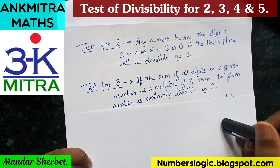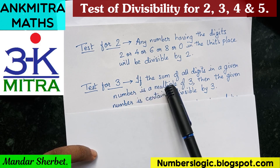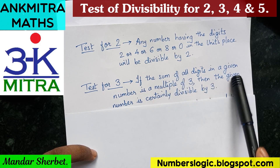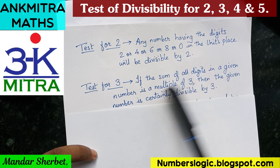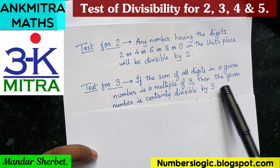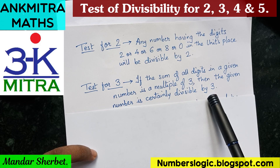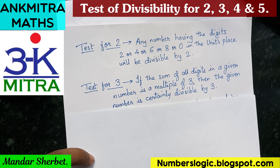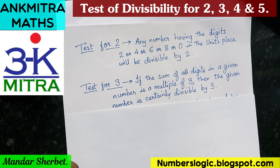So the test for divisibility for 3 is: if the sum of all the digits in a given number is a multiple of 3, then the given number is certainly divisible by 3. If you have a 4-digit, 5-digit, or even a 10-digit number, all you have to do is add up all the digits. If that sum is a multiple of 3, the entire number will certainly be divisible by 3.